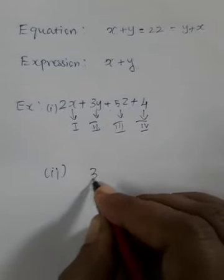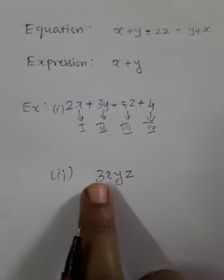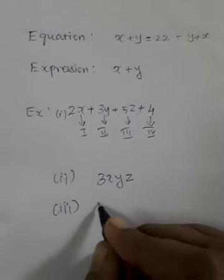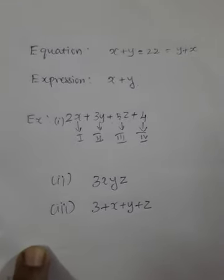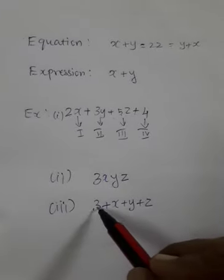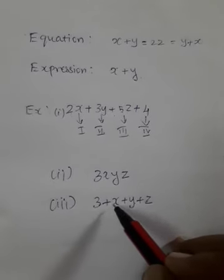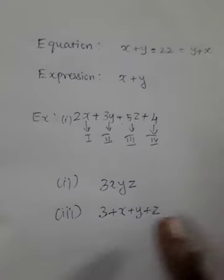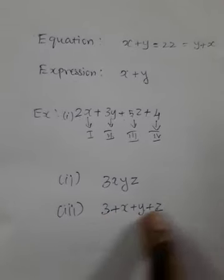Let me show one more example. Consider 3xyz — what kind of expression is this? It is a monomial, because there is no plus or minus here. Everything is in multiplication, so we cannot split it into terms. Now look at 3 plus x plus y plus z — this is a polynomial because we have term 1, term 2, term 3, and term 4, with plus signs in between. Here all terms are connected with plus, so we can identify four separate terms.